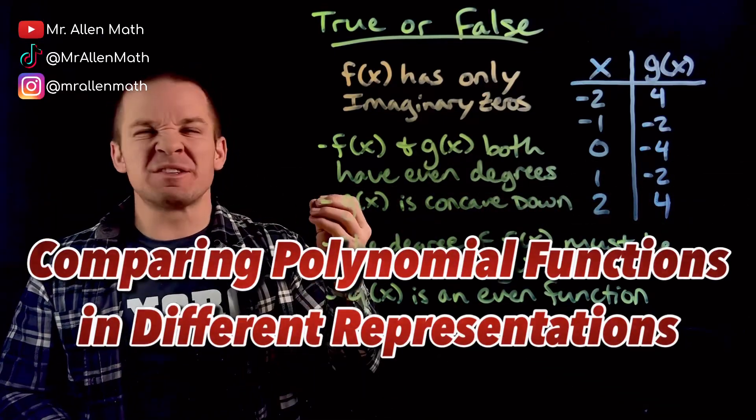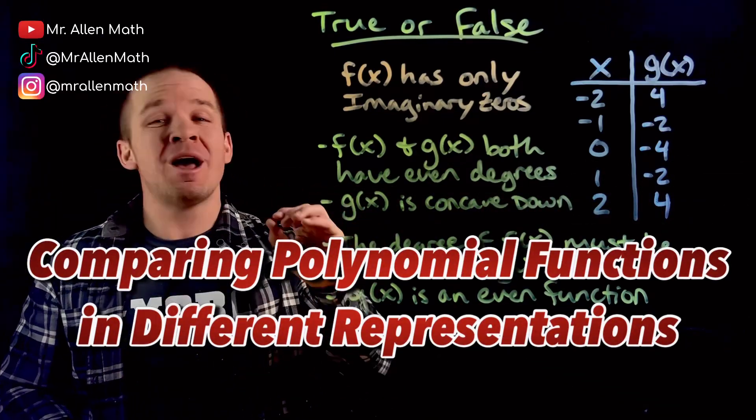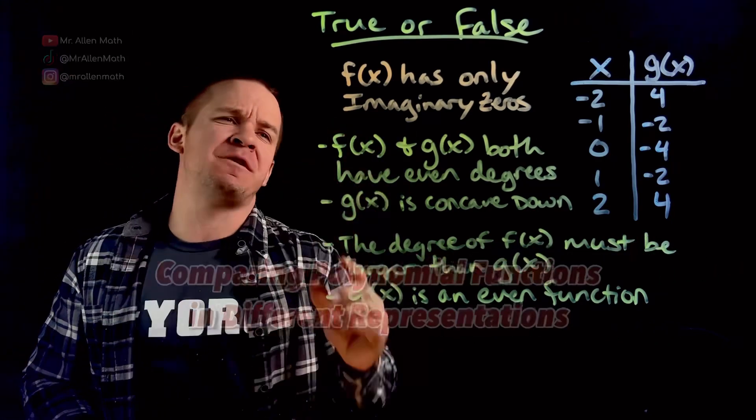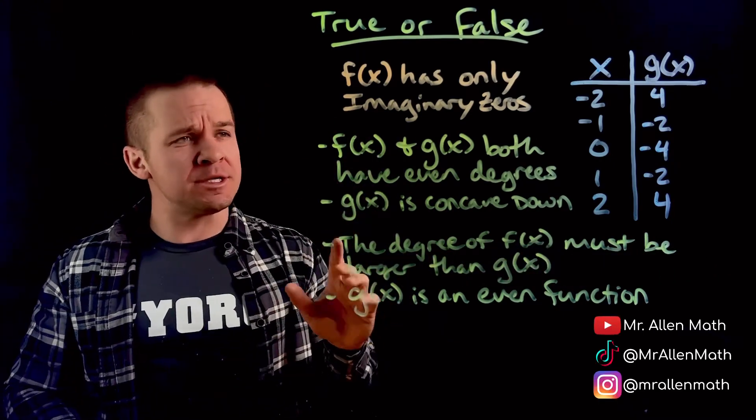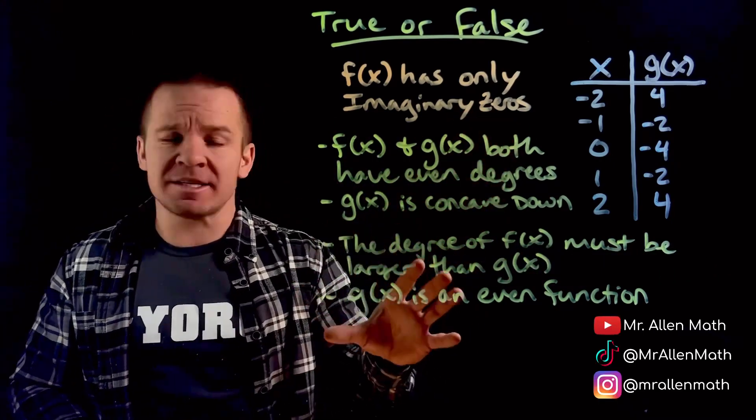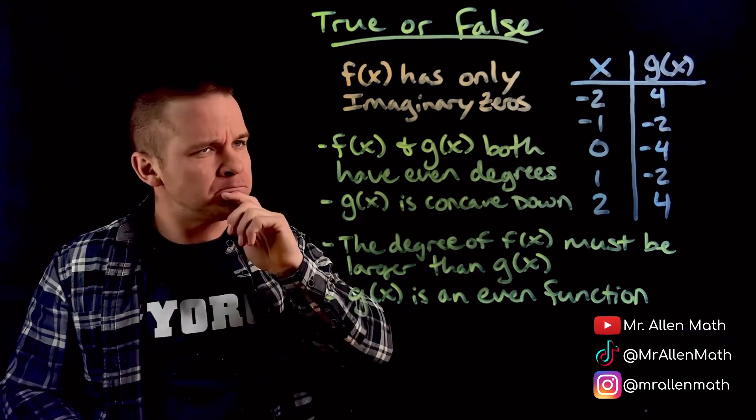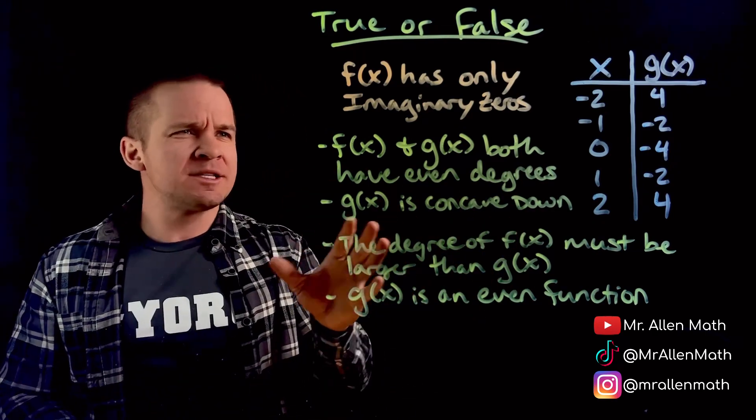What's going on you guys? Mr. Allen here. So we have ourselves a little bit of true or false here with two super fun functions. We have f of x has only imaginary zeros, and then g of x has a table of values there showing us what's going on with that one. Well this is interesting. So let's take a look here.